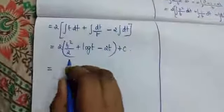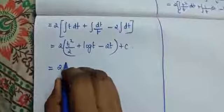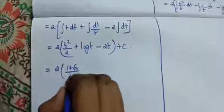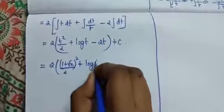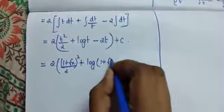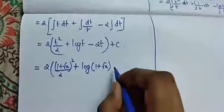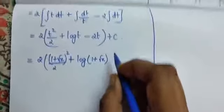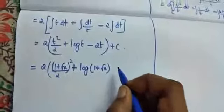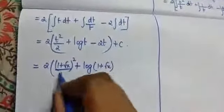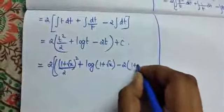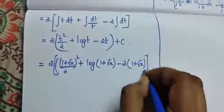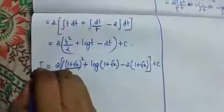Now substitute what is our t. Our t is 1 plus root x. So the answer is 2 into 1 plus root x whole squared divided by 2, plus log of 1 plus root x, minus 2 into 1 plus root x, plus c. That is our final answer for the 10th problem.